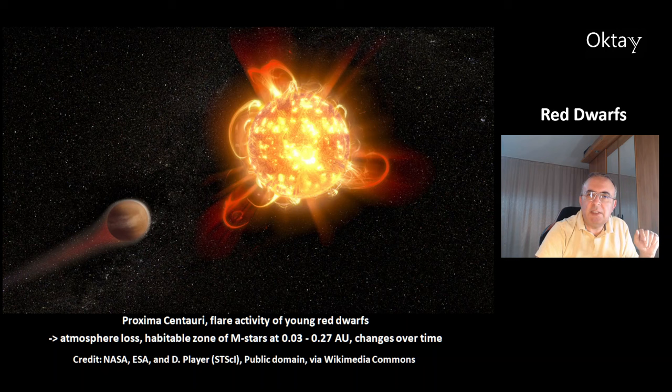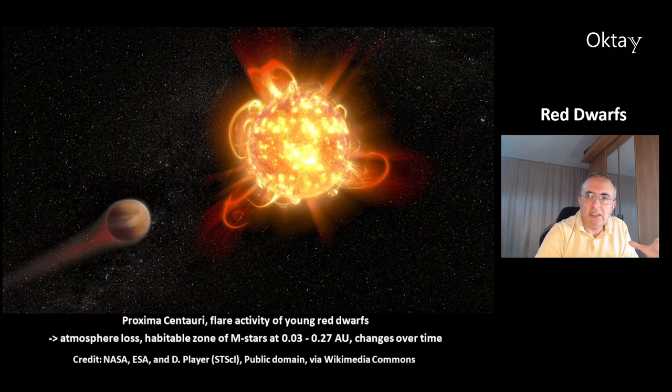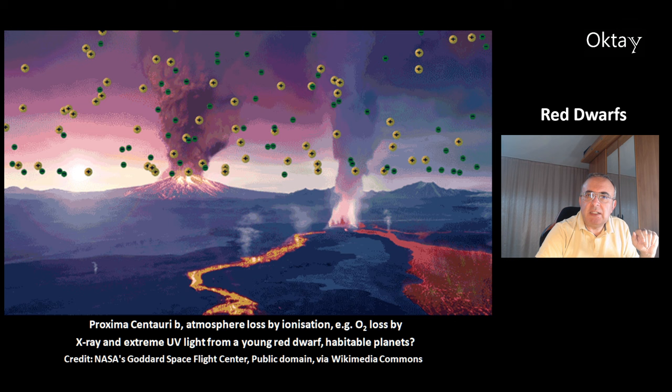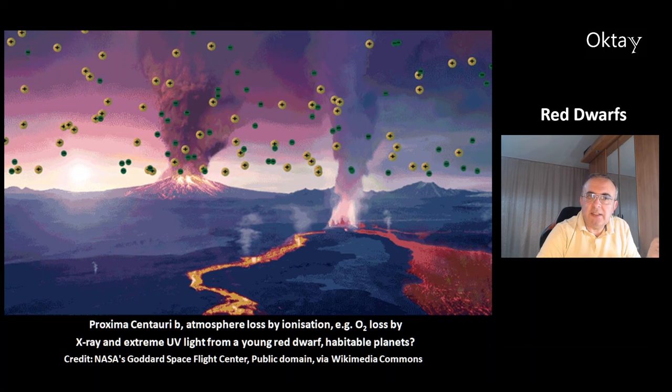The habitable zone of an M-star, depending on its mass, is between 0.03 to 0.27 AU, and it changes over time because the fusion rate increases slightly over time. Atmosphere loss could work on a planet like Proxima Centauri b by ionization — for example, of oxygen — by X-ray and extreme UV light from the young red dwarf.